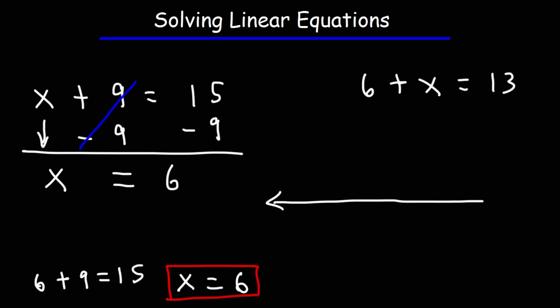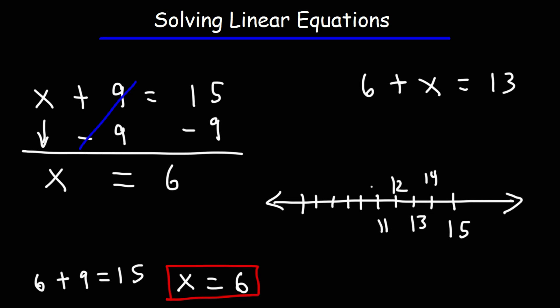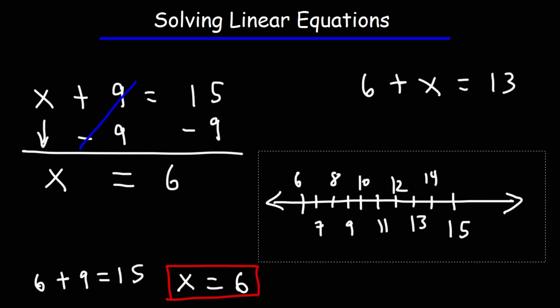For those who may not be sure of that, you could use the number line. If you have 15 and want to subtract by 9, simply travel 9 units to the left: 14, 13, 12, 11, 10, 9, 8, 7, 6. So when you're subtracting, move to the left on the number line; when you're adding, move to the right. That's how you can do 15 minus 9.